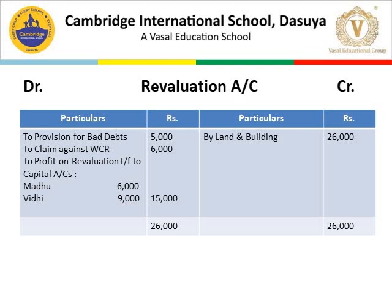Closing the revaluation account using double-entry: debit side totals Rs. 11,000 (Rs. 5,000 + Rs. 6,000) and credit side Rs. 26,000. So Rs. 26,000 minus Rs. 11,000 gives Rs. 15,000 profit on revaluation, which is transferred to Madhu's and Vidhi's capital in the old ratio of 2:3 — that is Rs. 6,000 to Madhu and Rs. 9,000 to Vidhi.